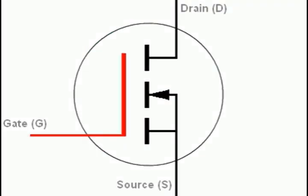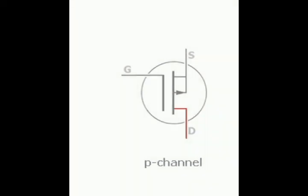In general, Enhancement and Depletion MOSFETs are made in two types, N and P. In N type, the current flows from the drain to the source, and in the P type, the current flows from the source to the drain.